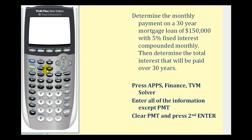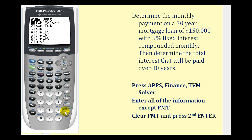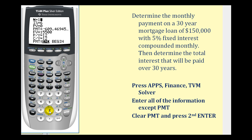So we're going to press the APPS key, and then press Enter to access the finance menu, and then press Enter again to access the TVM Solver. Capital N represents the total number of payments that will be made. We're making monthly payments over 30 years, so N would be 12 times 30, or 360.